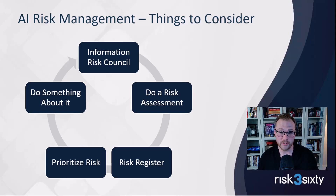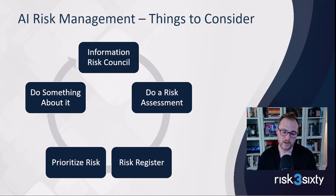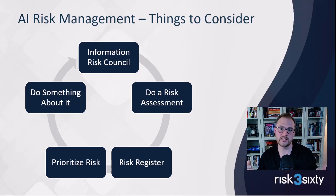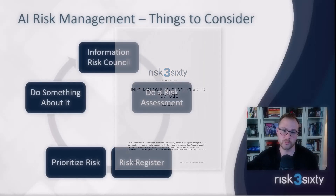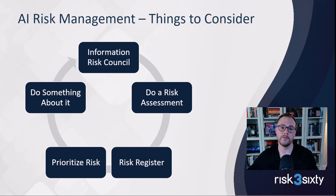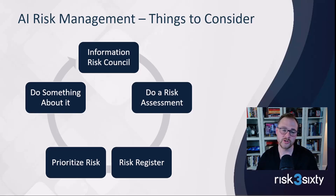There are five buckets when you think about AI risk management. At Risk 360, when we're helping organizations set up a risk management program, this is what we think about. First, there has to be a governing body to ingest and act on risk — we often call that the IRC, or Information Risk Council. That's usually accompanied by a risk council charter that formally governs the body, defines roles and responsibilities, and defines membership. The risk council typically operates on a quarterly meeting cadence, getting together to review risk and make decisions.